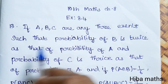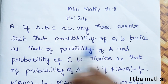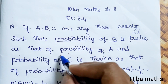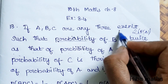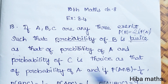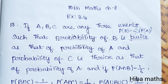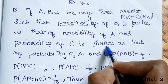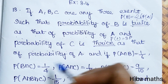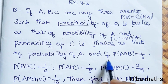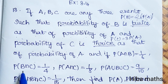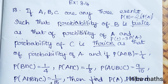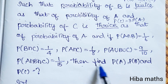If A, B, C are any 3 events such that the probability of B is twice the probability of A, so P(B) = 2·P(A). And probability of C is thrice the probability of A, so P(C) = 3·P(A). Given: P(A∩B) = 1/6, P(B∩C) = 1/4, P(A∩C) = 1/8, P(A∪B∪C) = 9/10, and P(A∩B∩C) = 1/15.